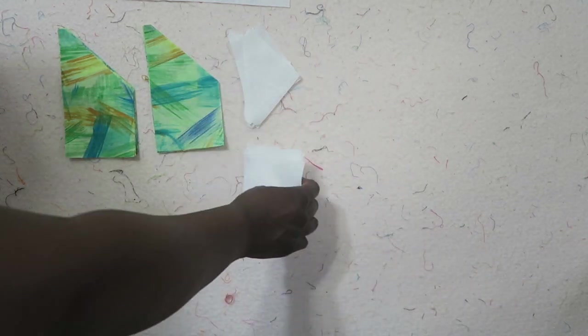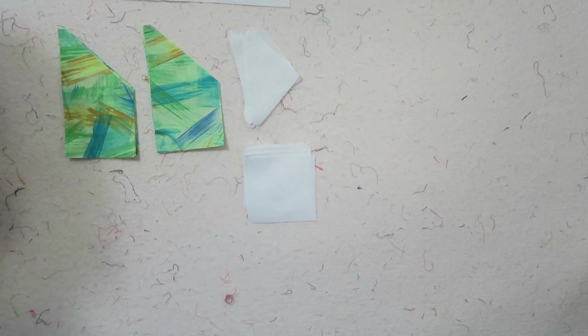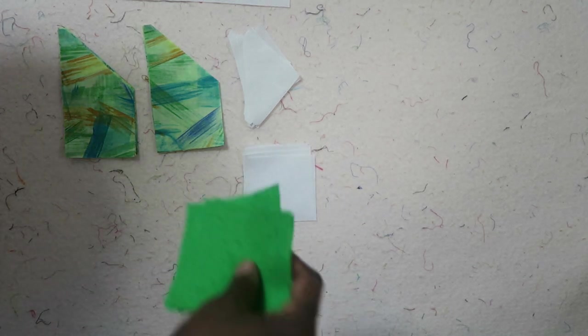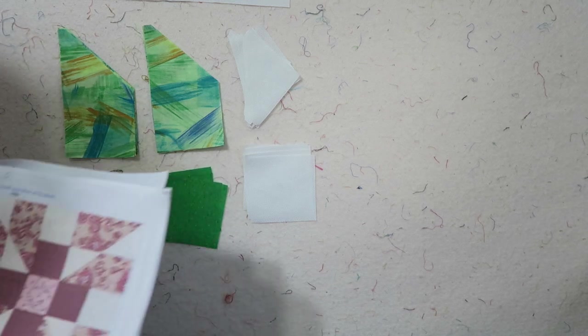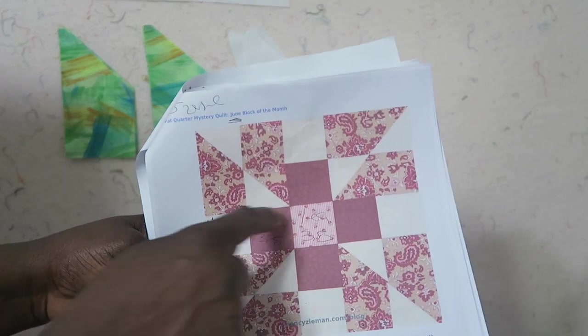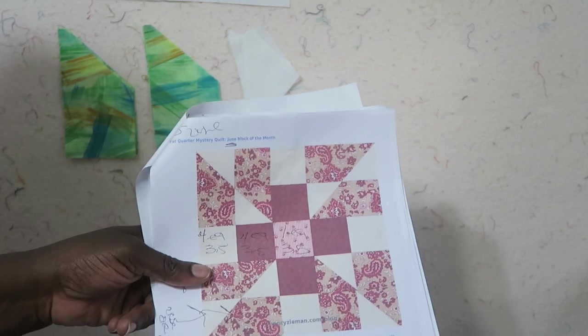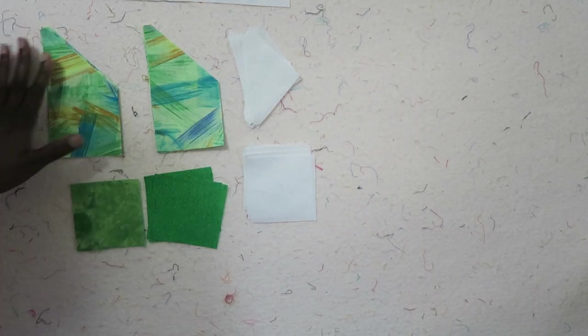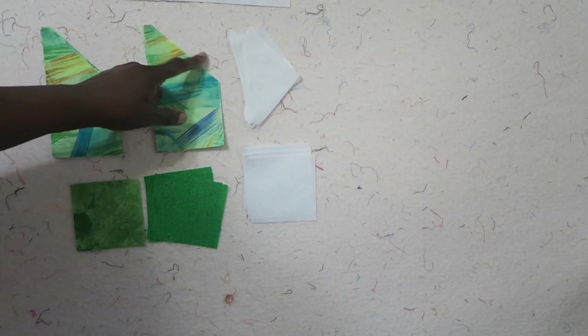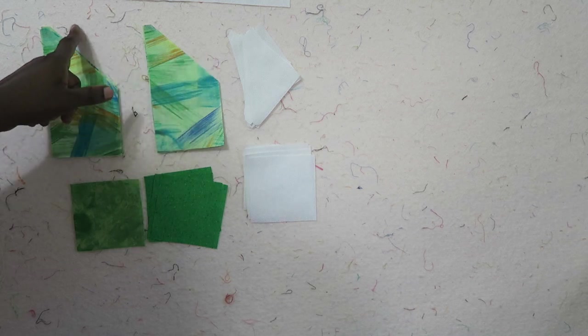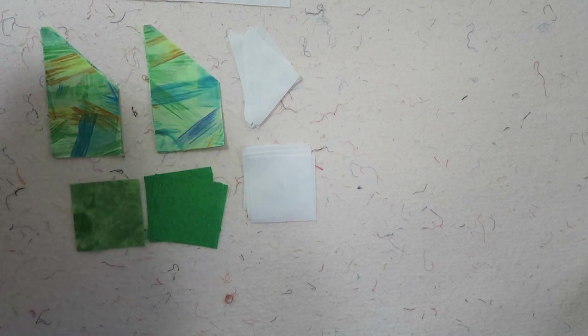The last things we need are four 3.5 inch squares from your background, four 3.5 inch squares from another color which is these squares here, and one center 3.5 inch square. The first step that I'm going to do prior to laying this block out is I'm going to attach all of my half square triangles to my chisel pieces. Once I do that I will come back and lay this block out.